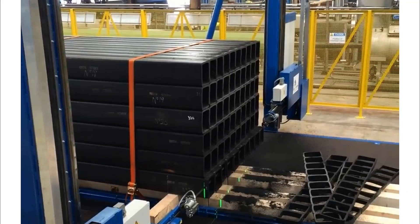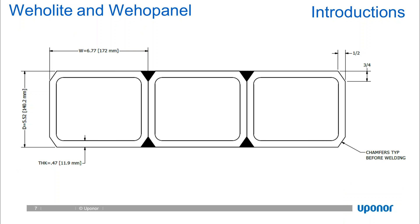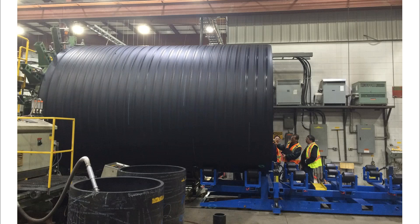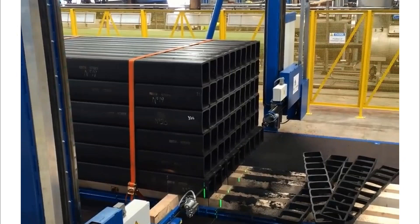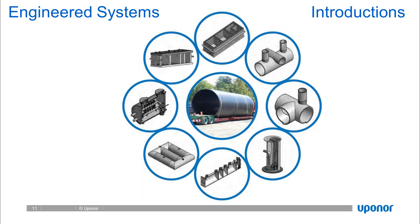We can also extrude it in flat sheet material, which we refer to as Weopanel, creating sheets that can be used as bulkheads, end sections, and buoyancy countermeasures for vessel applications. We can also combine them in rectangular form to create modular structures of any rectangular configuration. In summary, we have a robust structural profile with both inside and outside welds, able to produce large diameter pipes and rectangular materials using thermoplastic welding and fabrication in a high-quality plant environment.